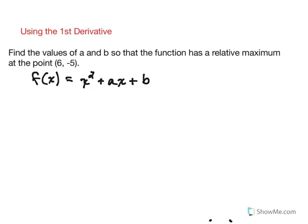So in this case we have a quadratic x squared plus ax plus b and we are told there is a relative maximum at the point 6 comma negative 5.